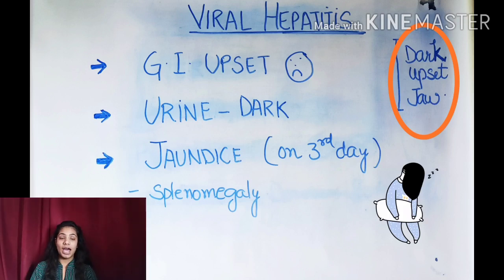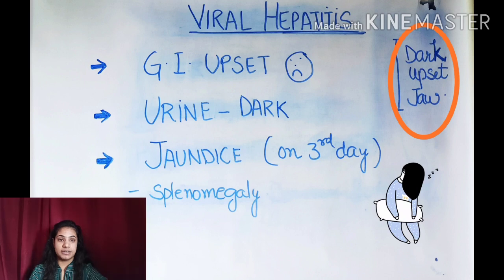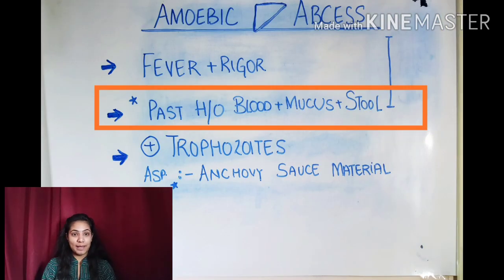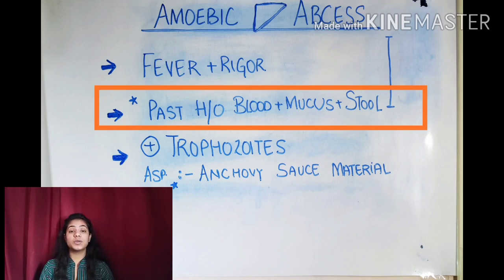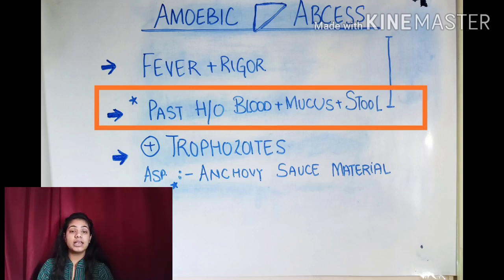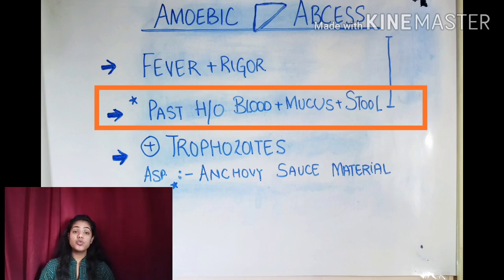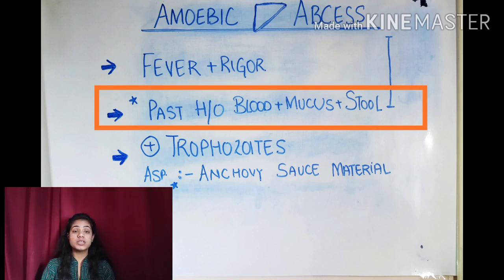Now when we differentiate hepatomegaly from amoebic liver abscess, the patient will have fever and chills with rigors. The liver will be tender — when we palpate the liver, we will find hepatomegaly along with liver tenderness.